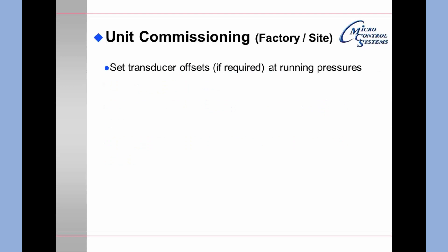You can set the transducer offsets if required, but you should do it at running pressures. That is, allow the system to get down to its operating position before testing any transducers and putting in any offsets. You should not require any offsets for amp sensors or temperature sensors. If they are not reading correctly, you need to go back and re-verify the wiring.